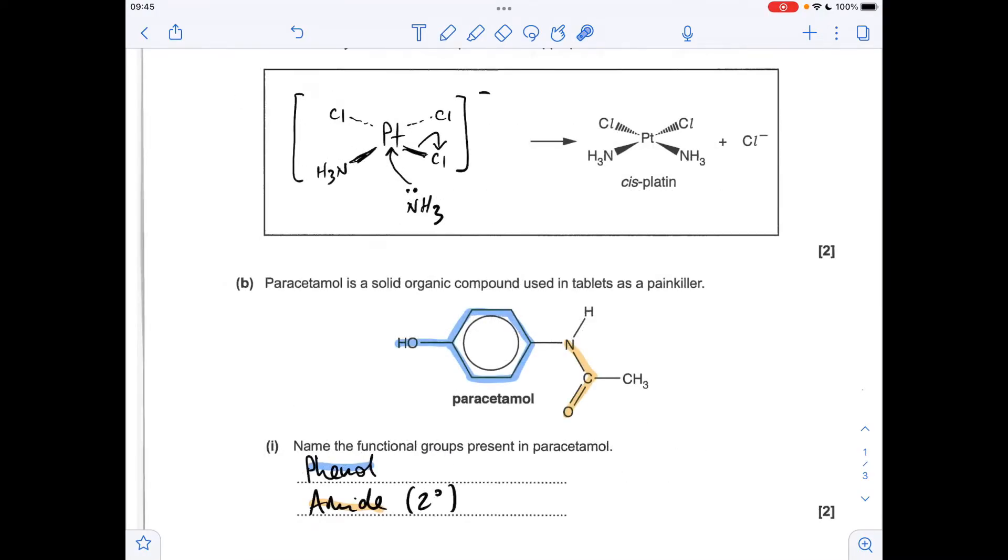Part B now, so the two functional groups in paracetamol are the phenol functional group, so that's an OH group directly bonded to a benzene ring and we've also got this NC double bond O, so that's an amide group. It's actually a secondary amide but you didn't need to say secondary, because there are two carbons directly bonded to the nitrogen.